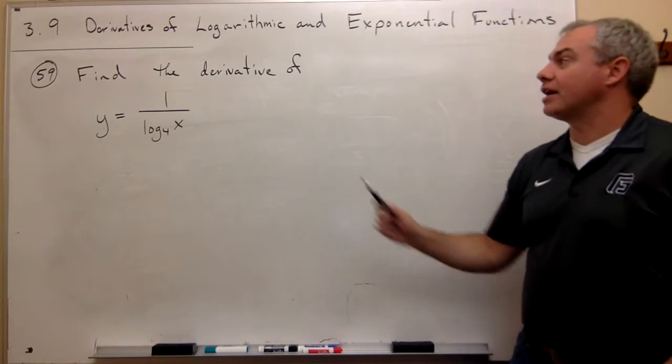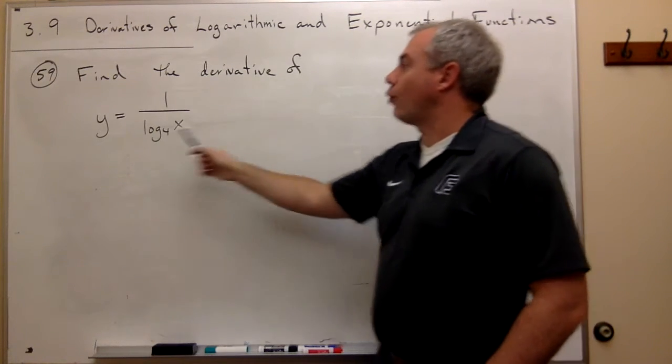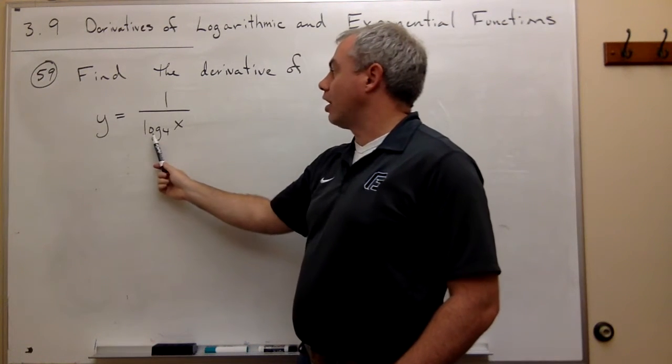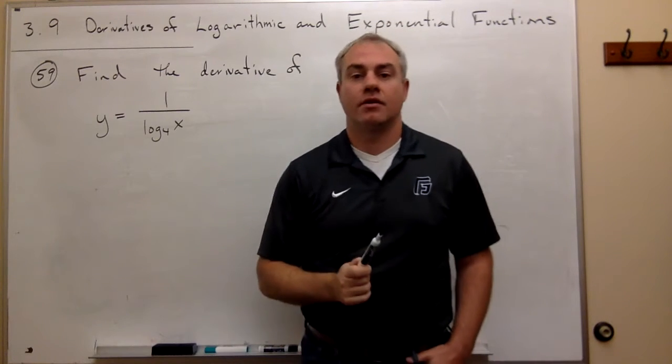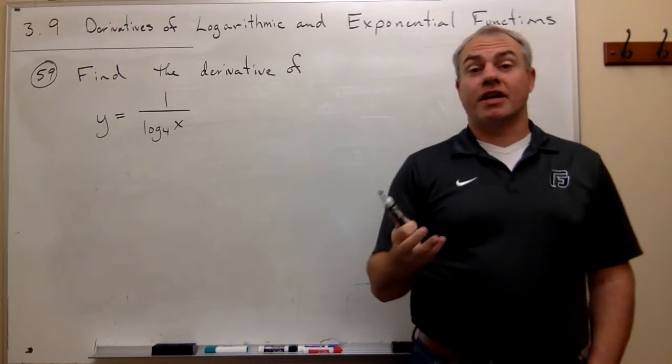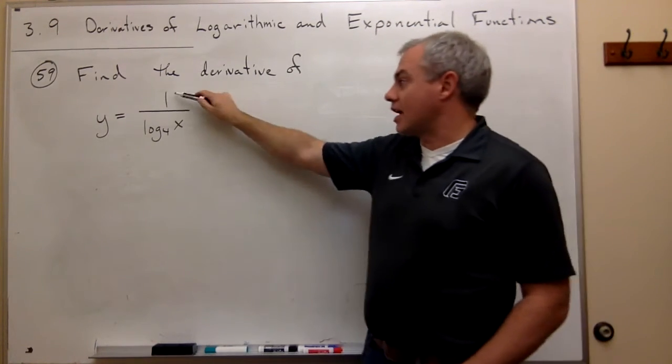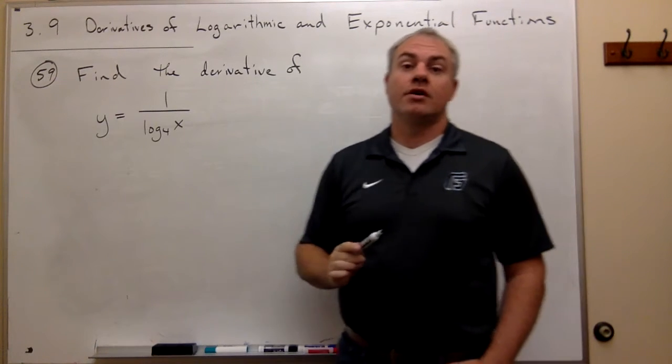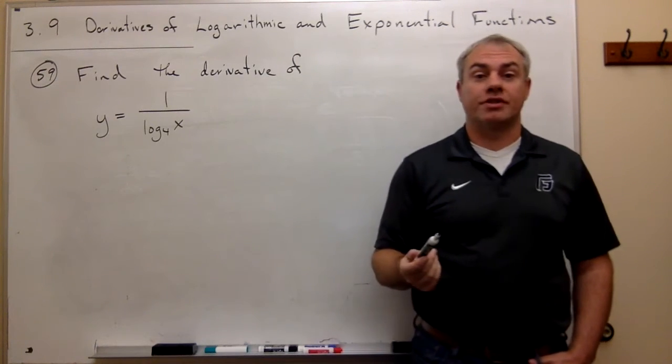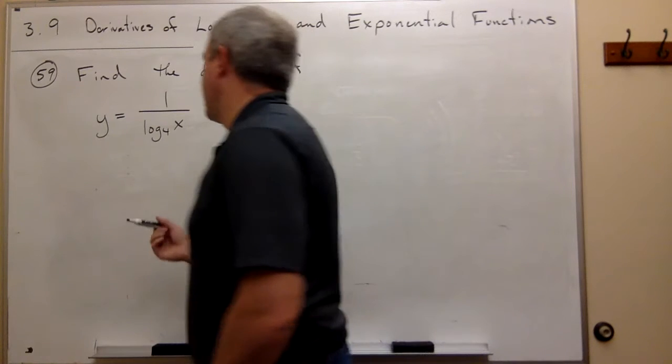In problem 59, I'd like to find the derivative of y equals 1 over log base 4 of x. The first thing I see here is this is a quotient, so I can use the quotient rule to take the derivative. Let's go ahead and do that.